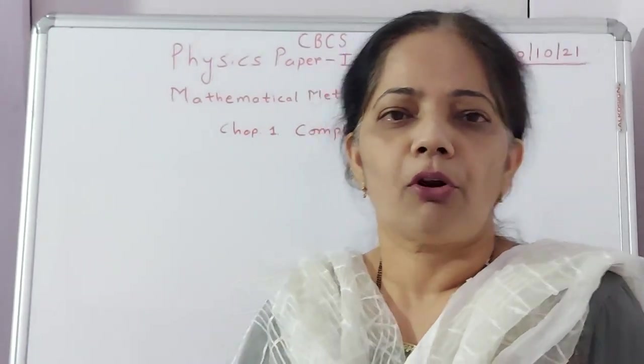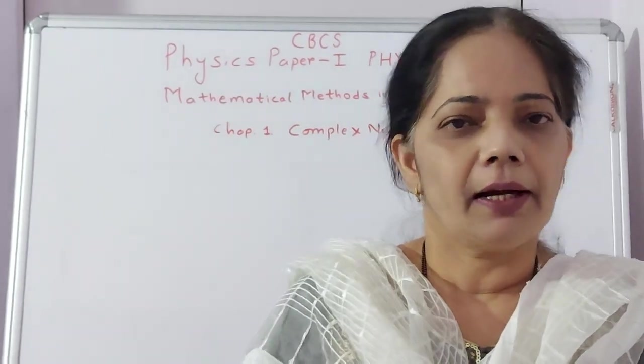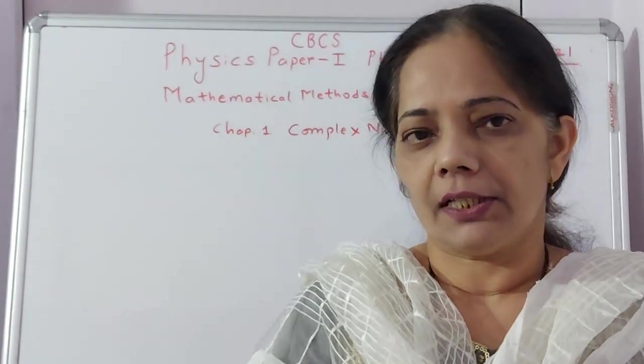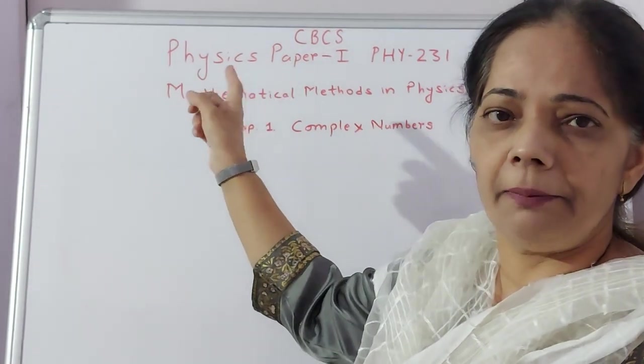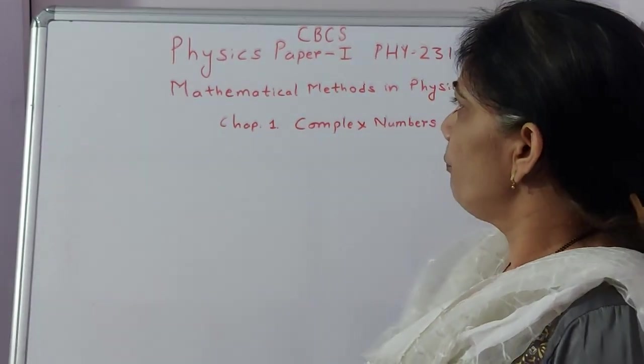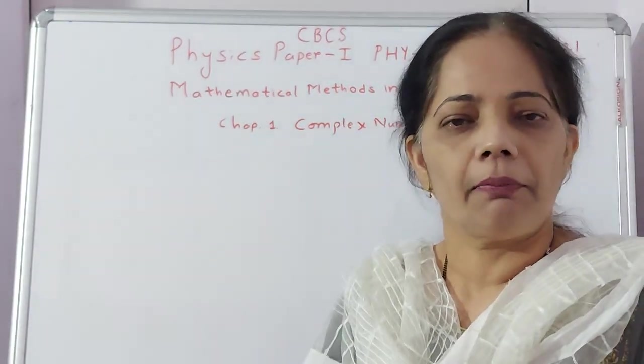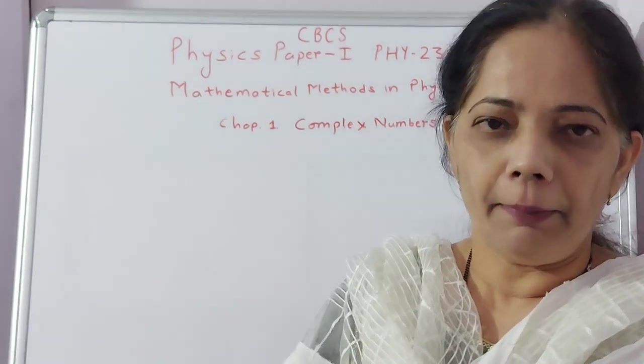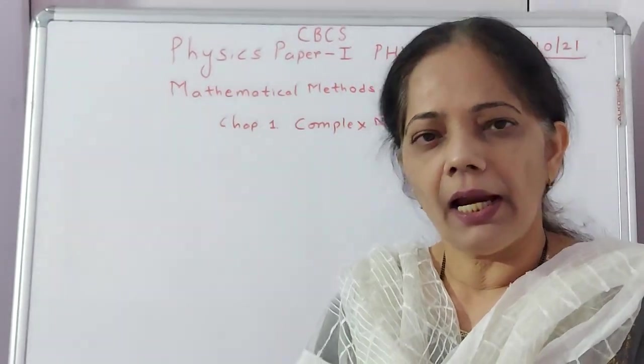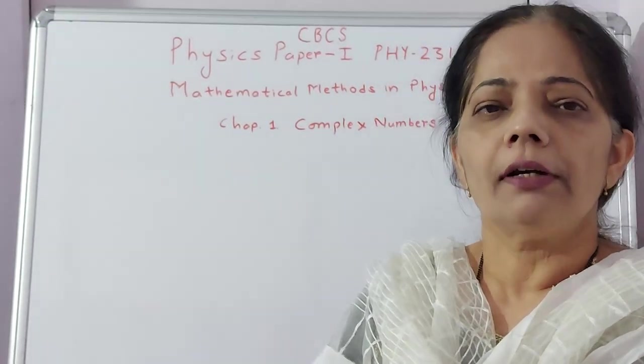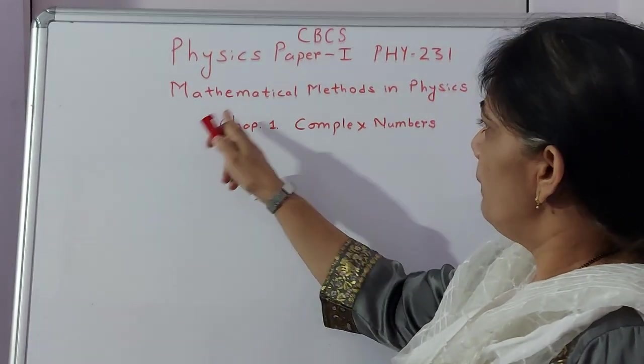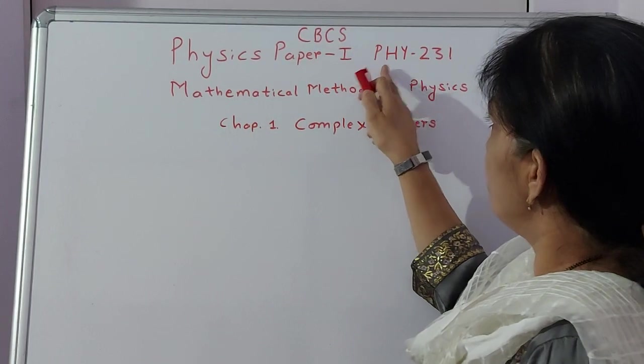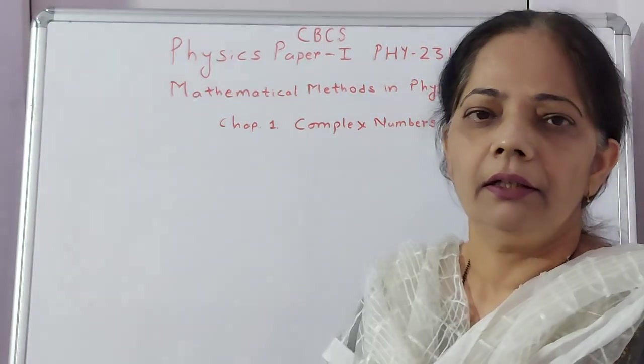Hello students, as promised last week, I will be conducting your Physics Paper 1, which is under the CBCS pattern, credit based system. We have two papers this semester, Physics Paper 1 and Physics Paper 2. I will be taking for Division B and C, or Division 2 and 3. Paper 1 is Mathematical Methods in Physics, which is PHY-231.